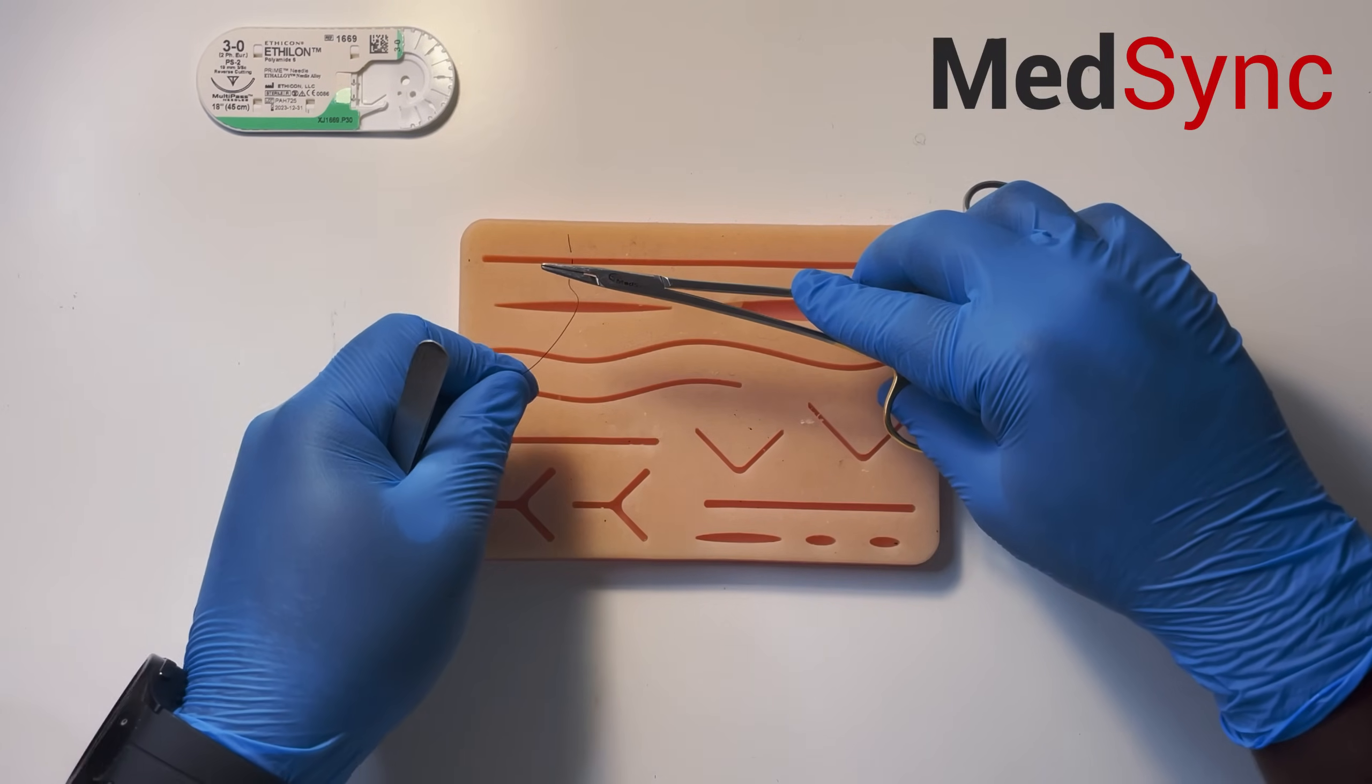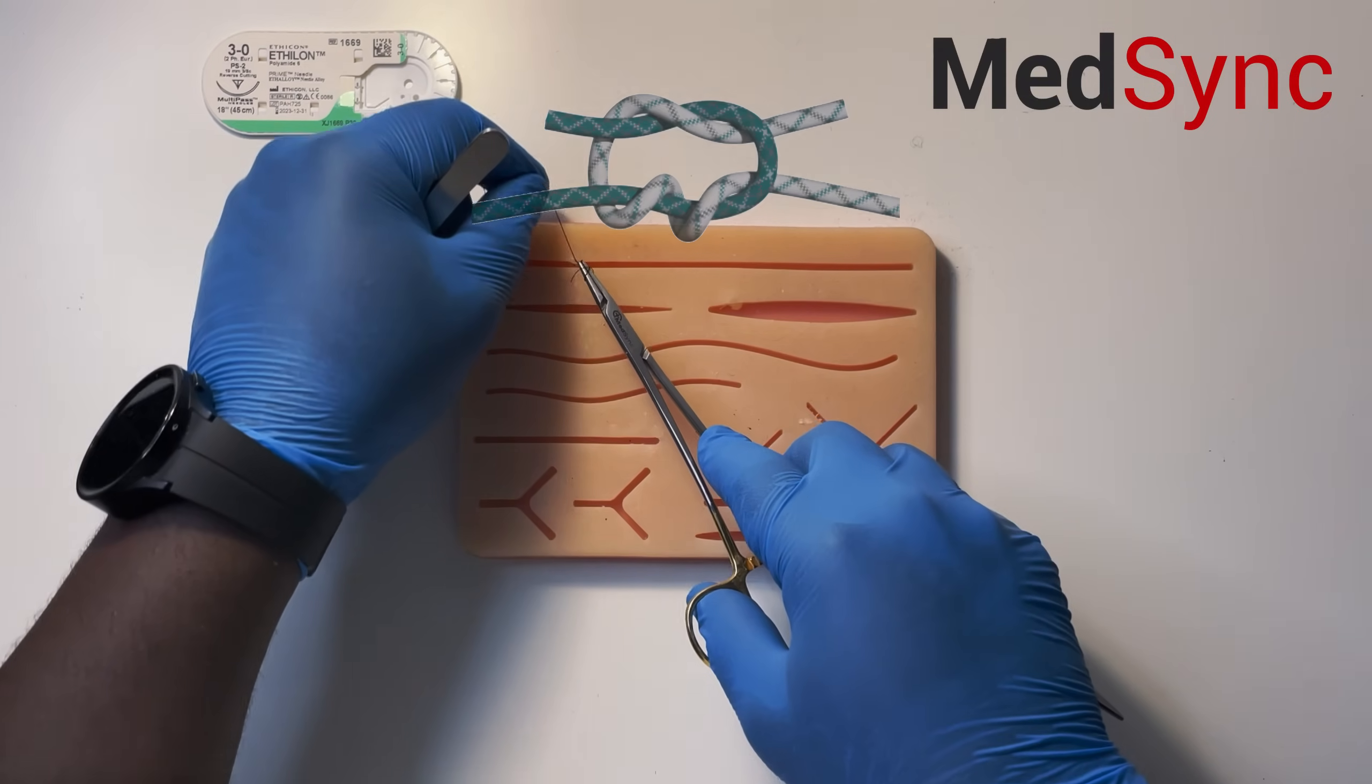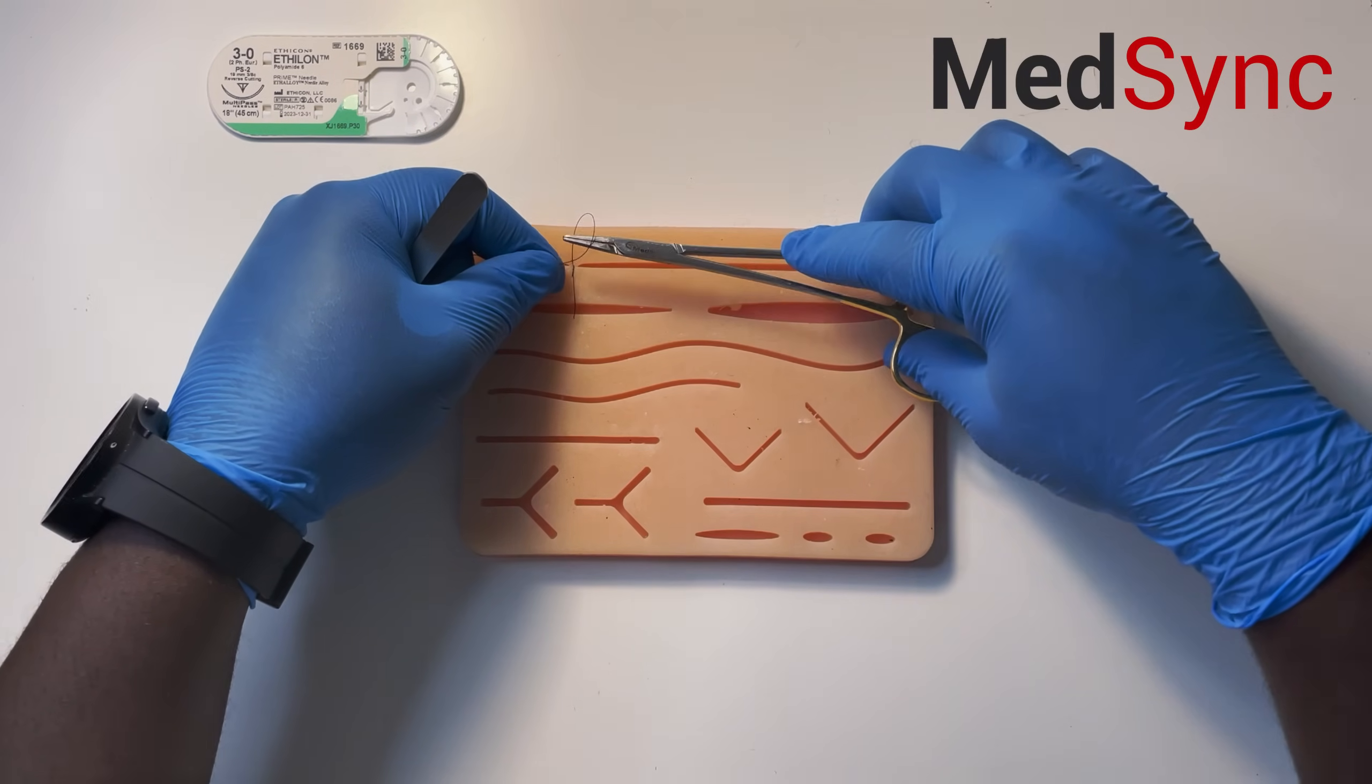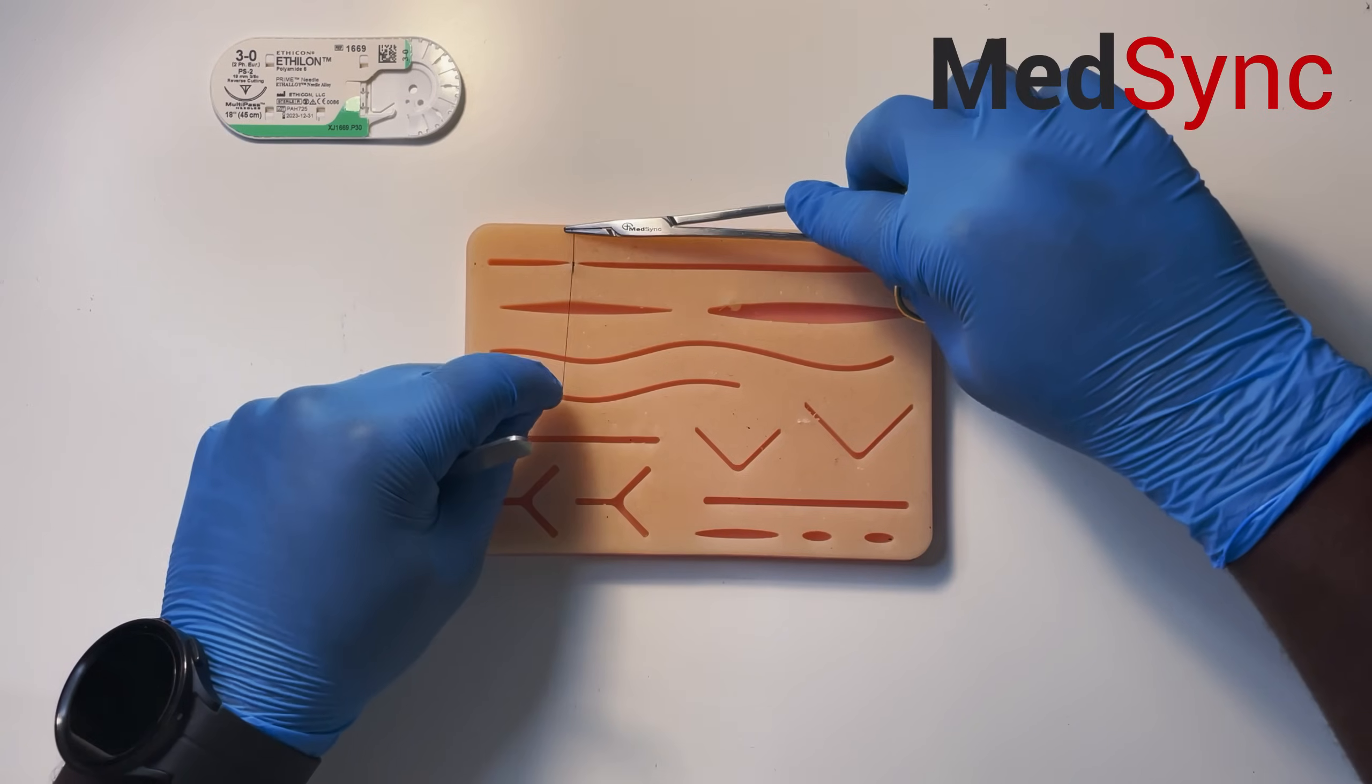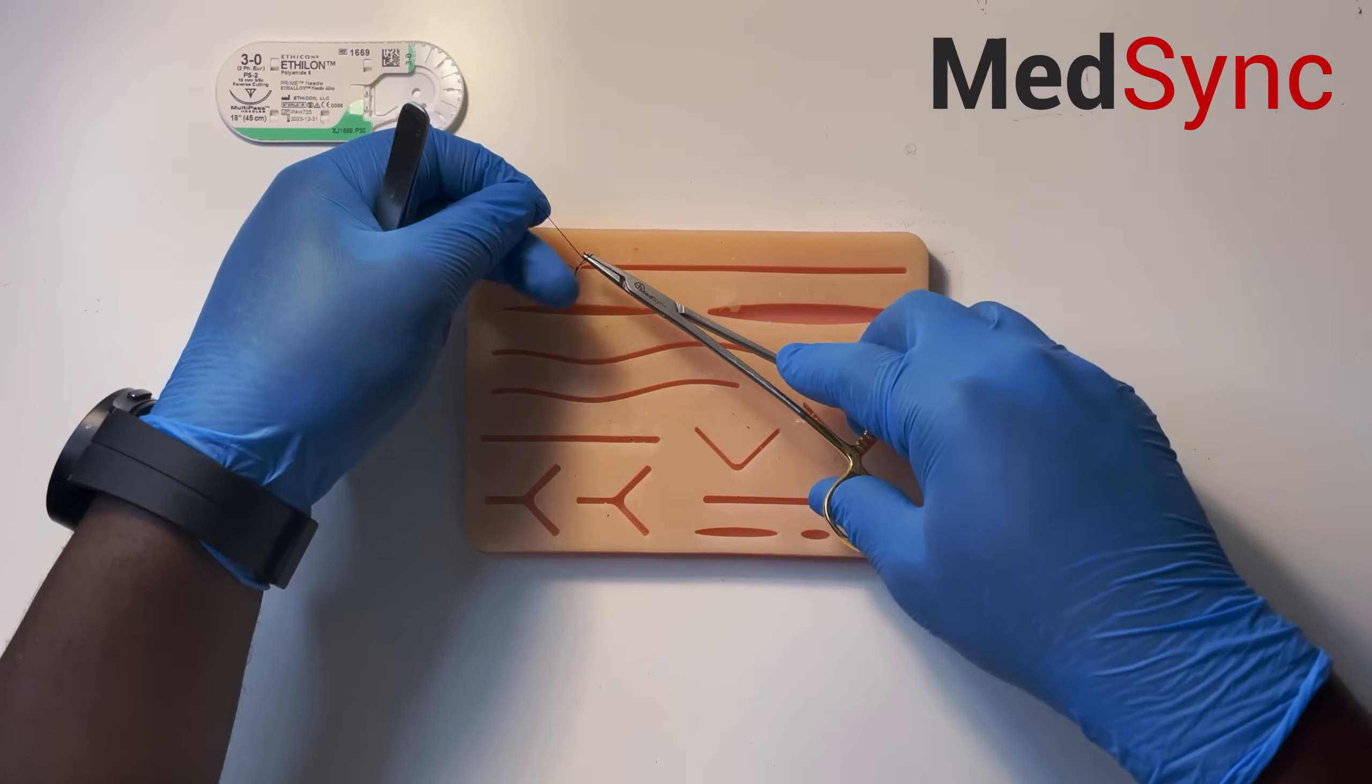Wrap the suture just around the tip of the needle holder by pushing forward for your surgeon's knot and tie. You pull it forward - it makes the loop for you. Put the needle holder in between, grab the short end at the tip, and alternate. One more time: push it forward, it creates the loop and tie.